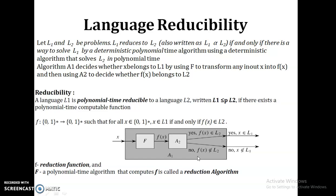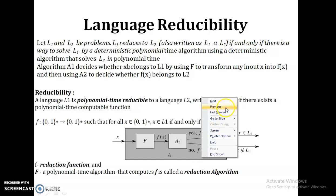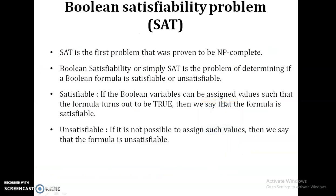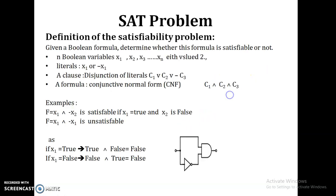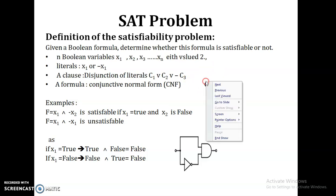So let's see the SAT problem. The Boolean satisfiability or SAT problem is a Boolean formula and we have to prove whether it is satisfiable or not. Satisfiable means if the Boolean variables are assigned some values and that formula turns out to be true for any combination, then you can say it is satisfiable. Otherwise, you can say it is an unsatisfiable problem.